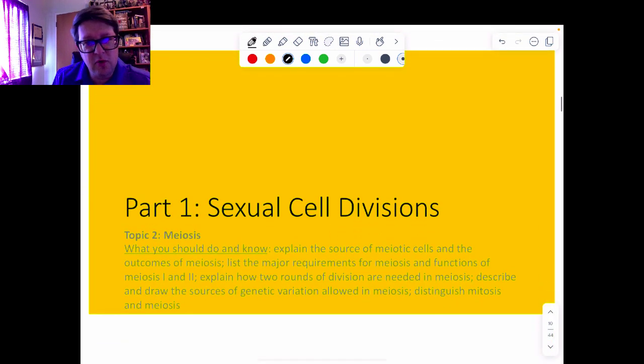The way that we go from being diploid to haploid is a process called meiosis, and that's where we're going next.